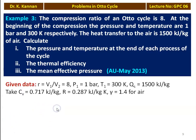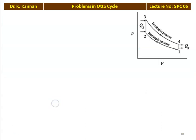Given data: compression ratio R equals V1/V2 equals 8, P1 equals 1 bar, T1 equals 300 Kelvin, heat supplied equals 1500 kJ/kg. We take Cv equals 0.717, R equals 0.287, and gamma equals 1.4 for air. The PV diagram shows: 1 to 2 isentropic compression, 2 to 3 constant volume heat addition, 3 to 4 isentropic expansion, and 4 to 1 constant volume heat rejection.